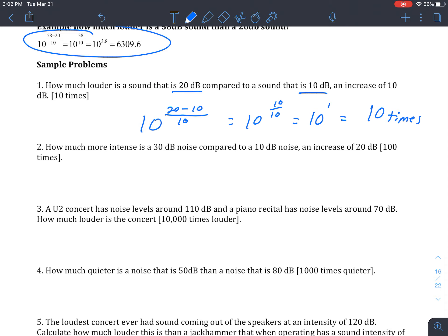So for 2, how much more intense or how much more loud is a 30 decibel noise compared to a 10, which it's telling us it's an increase of 20. That kind of helped us there. So the same thing, we're doing 10 to the 30 minus 10 over 10. And again, that whole value here is an exponent. So it's 10 to the 20 over 10, which is really 10 to the 2 because we need to be in bells, and that's going to be 100 times louder.